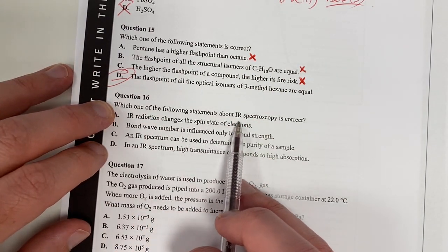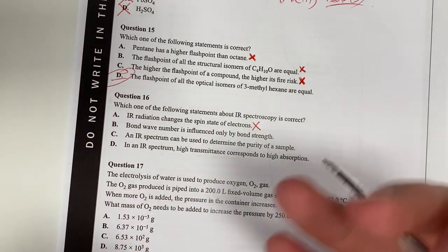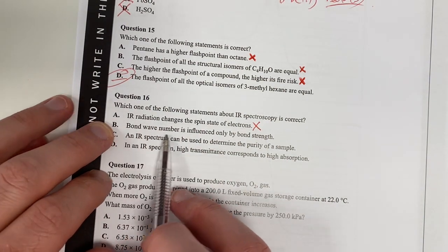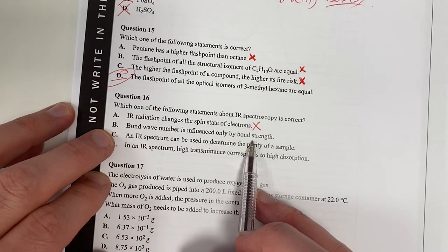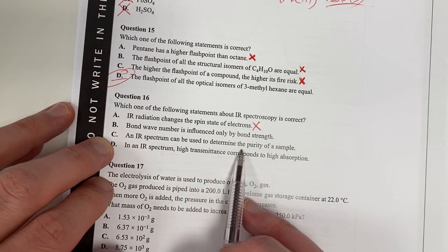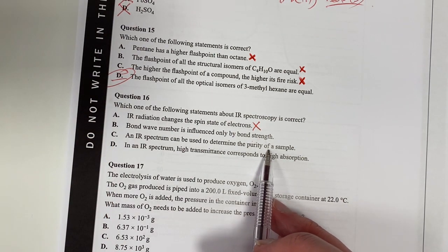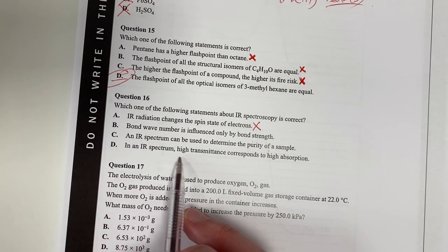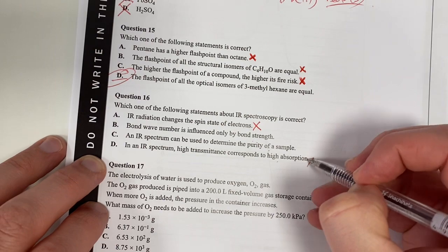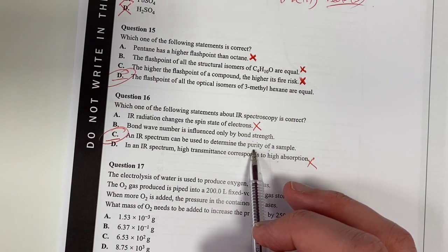Let's move on to question 16 and I'm going to spend time thinking about that. Which of the following statements about IR spectroscopy is correct? IR radiation changes the spin state of electrons that's not true. IR radiation actually impacts the bond vibration of our molecule. Bond wave number is influenced only by bond strength. I think it's bond length as well so I don't want to say that. I'm going to move on. An IR spectrum can be used to determine the purity of a sample. Technically that's right because if you have impurities you'll have additional absorption so that kind of makes sense. In IR spectroscopy in IR spectrum high transmittance corresponds to high absorption. That is not making sense at all. I'm going to say C there for logic that you could find purity by knowing if you have peaks that you should not have in your sample.